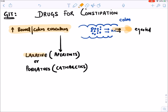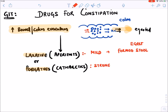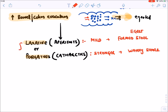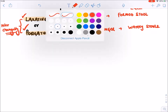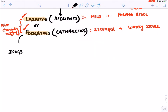There is a difference between laxative and purgative. Laxatives have a very mild action - they push feces very slowly, producing formed stools. Purgatives are stronger drugs that cause rapid bowel evacuation which can lead to ejection of watery stools. However, both terms are used interchangeably.